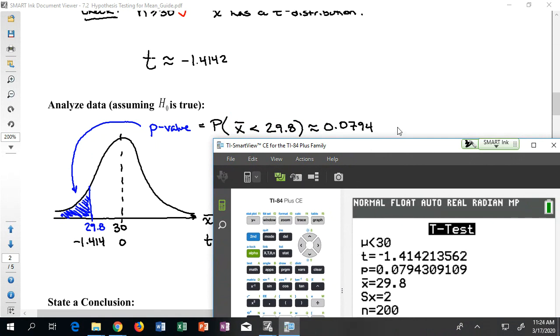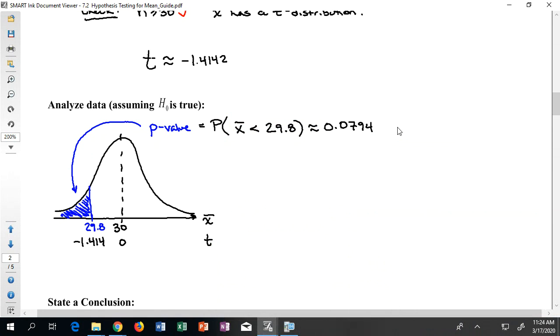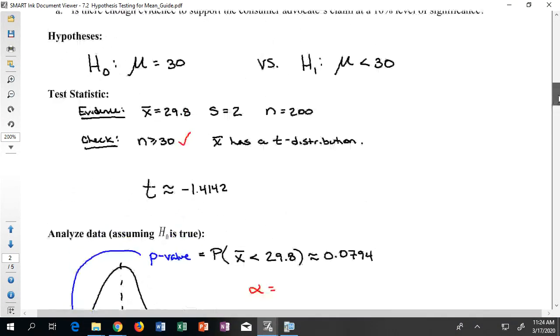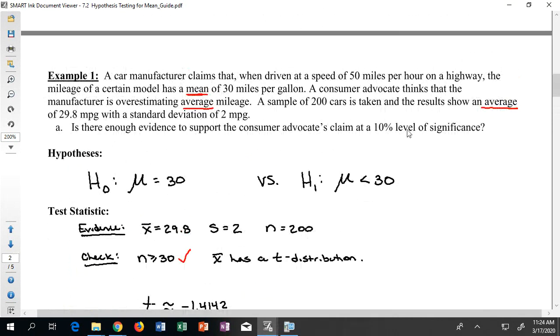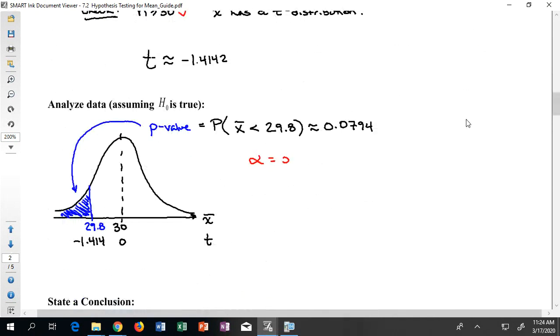And by our normal standard, that would be considered not rare, because it's not under the value of 5%. But remember that alpha tells us whether or not something is rare. In this case, we wanted to use a 10% level of significance, which means that our alpha is 0.10. So for this question, we're going to say that anything that happens under 10% of the time is rare.